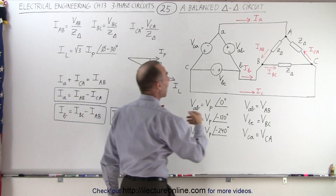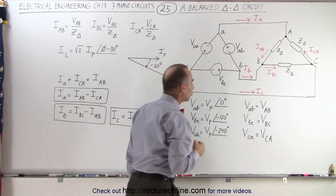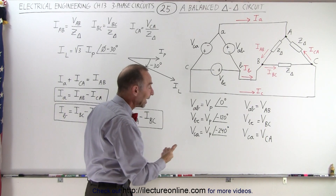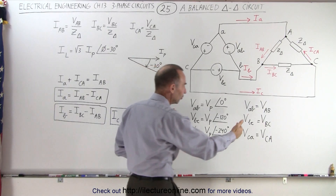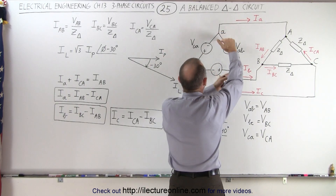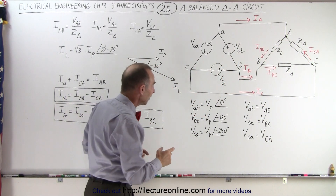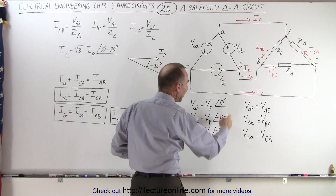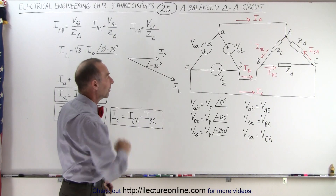It turns out that we have a voltage between A and B, a voltage between B and C, and a voltage between C and A. Those voltages are called the line voltages, and it turns out those are the same as the phase voltages and have the same phase angle. So there's no difference between the line voltages and the phase voltages in a delta-delta circuit. The voltage across each of the three branches of your delta source is equal to the voltages across the three branches of your load circuit, with the same magnitude and phase angle.